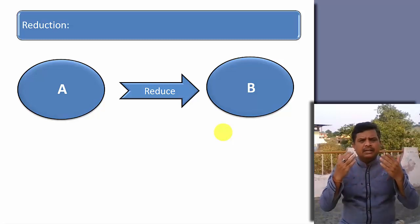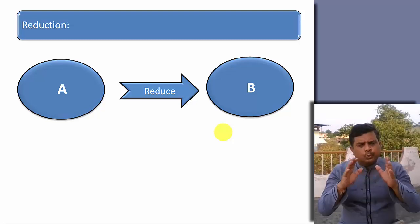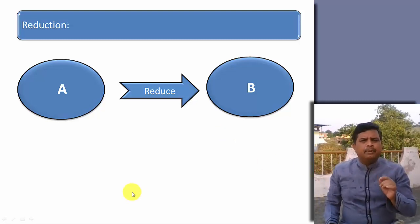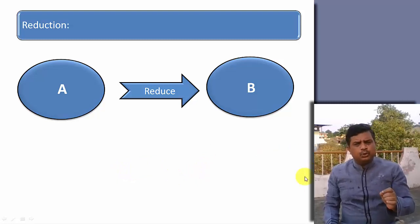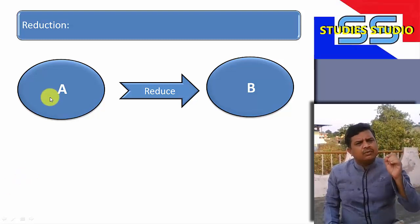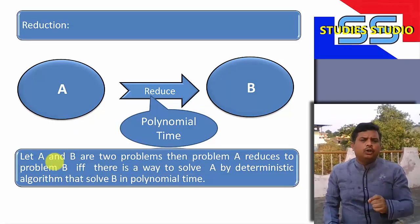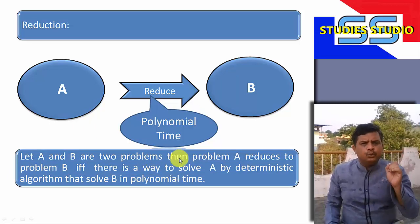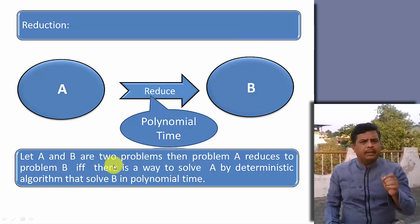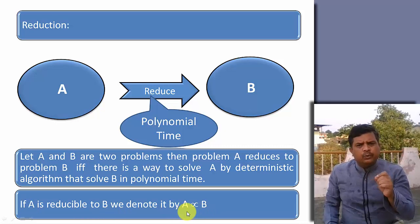Before going to discuss in detail about the clique problem, let us try to understand reduction, because unless you understand reduction, you will not be able to understand the total process. If a problem B is given and we want to show that problem B is NP complete or NP hard, then we have to take a problem A which is a known problem and we can transform or reduce this problem A to problem B. The reduction should take polynomial time. So, if A and B are two problems, then problem A reduces to problem B if and only if there is a way to solve problem A by a deterministic algorithm that solves B in polynomial time. If problem A is reducible to problem B, we denote it with a specific notation.